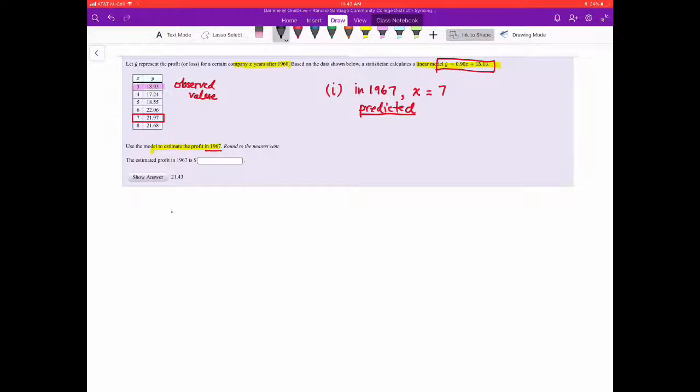All we have to do now is plug and chug. We're going to plug in X equals seven into the Y-hat equals 0.90X plus 15.13. So Y-hat is equal to 0.90 times seven plus 15.13. Putting that in the calculator I would get 21.43 and again I'm rounding to the nearest cent.